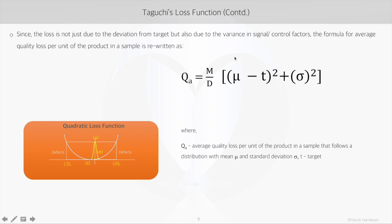So if qa is the average quality loss per unit of the product in a sample that follows a distribution whose mean is given by mu and standard deviation by sigma, then qa is proportional to the sum of the square of the deviation of mean from the target and the variance.